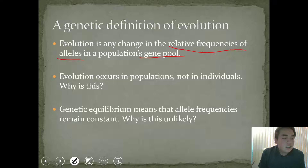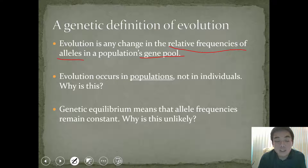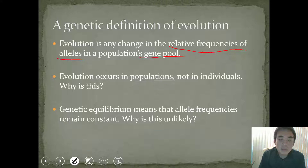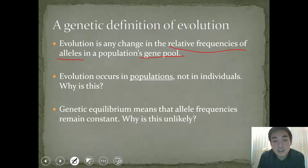Why is that? Natural selection and evolution doesn't work on individuals. Because in individuals, there is no variation between traits — an individual only has one type of trait. And natural selection doesn't work because there's no competition in the selection between a trait and an individual because there's only one. Versus in a population, you see variation — you see multiple traits in a population, and that's what natural selection works upon. So that's why we say evolution occurs in populations and not in individuals.